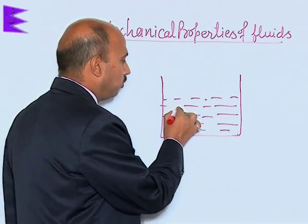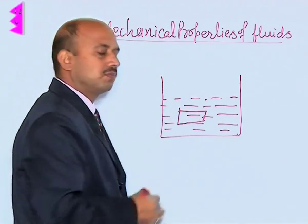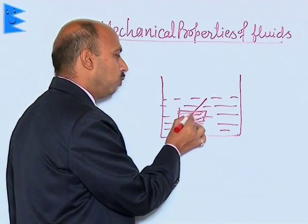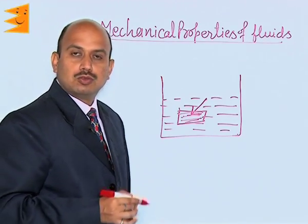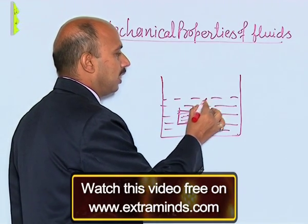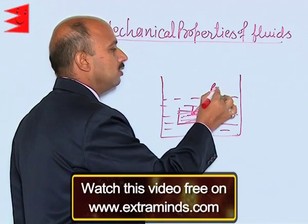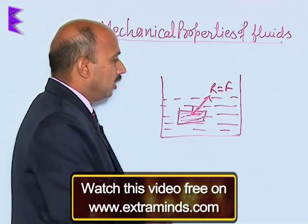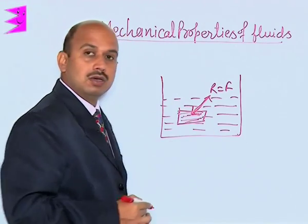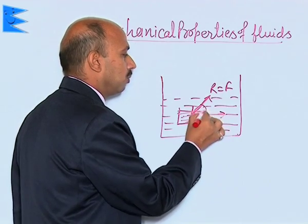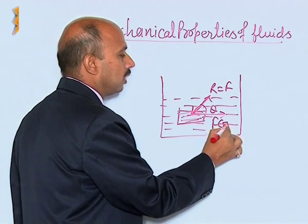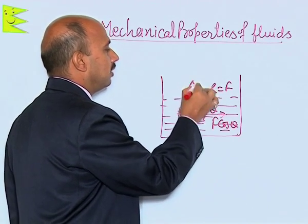Suppose there is an object inside the liquid. The liquid in contact with this surface applies force F to one side, and by Newton's third law there is a reaction force R equal to F acting in the opposite direction. This force F acts at an angle theta with the parallel surface of the body. So it has two components: F cos theta (tangential) and F sin theta (normal to the surface).